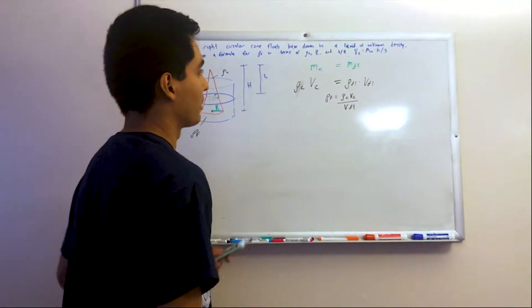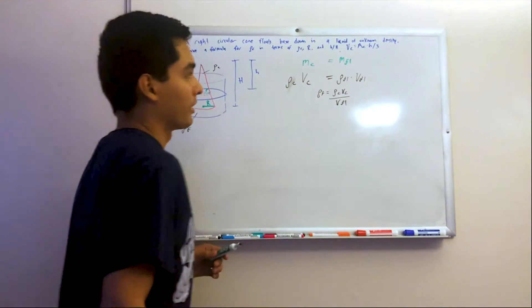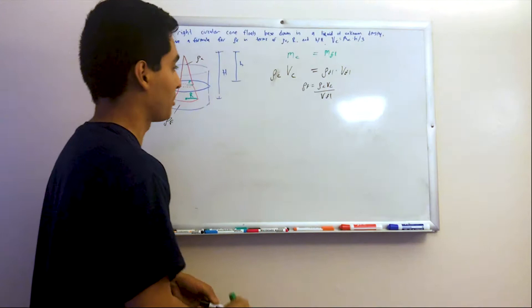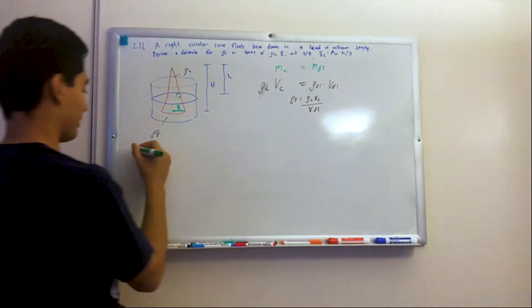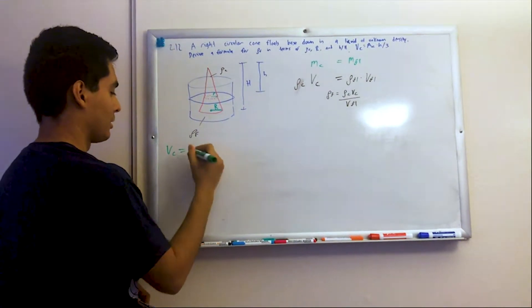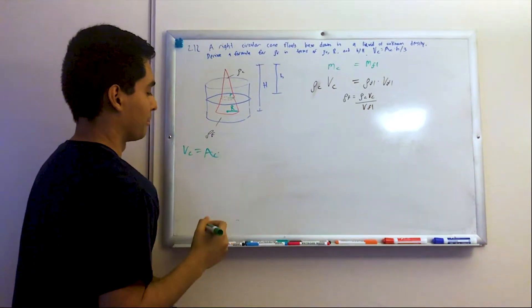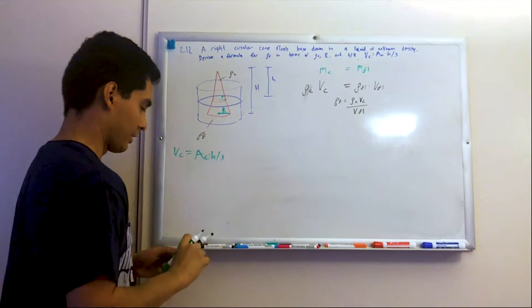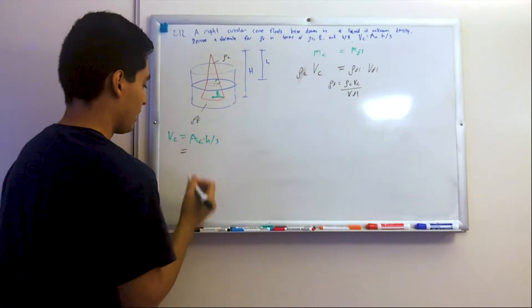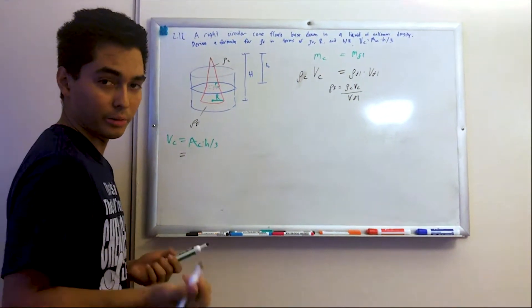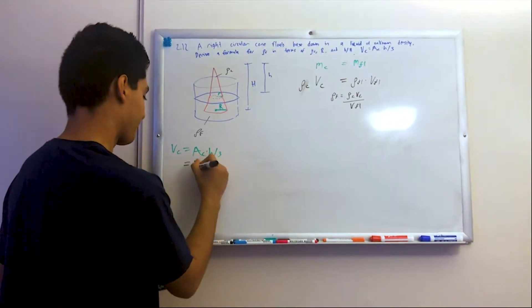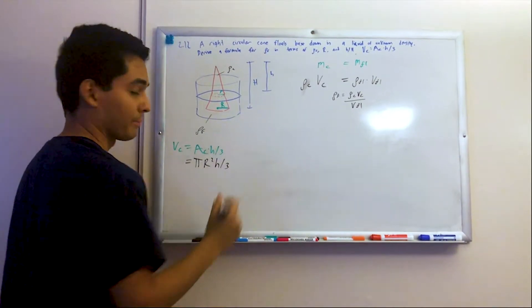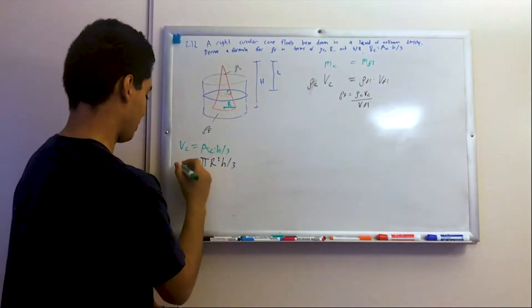The volume of the cone is going to be the cross-sectional area times the height divided by 3. The cross-sectional area is pi*R², so the volume of the cone equals pi*R²*H/3. And the volume of the fluid — well, this is the tricky part.